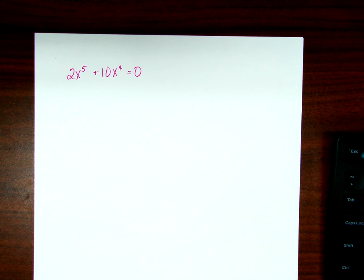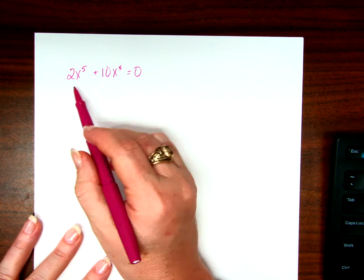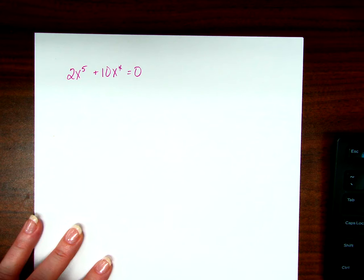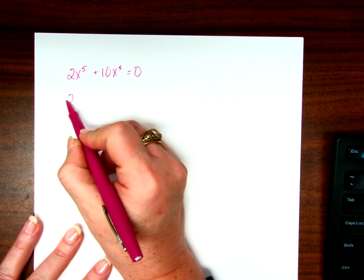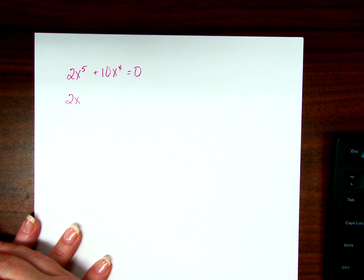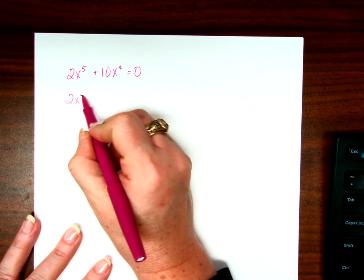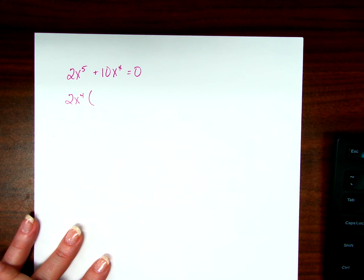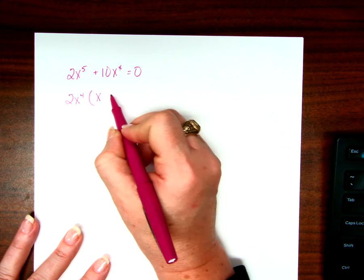So what do you want to do first? It's definitely an equation I have to solve, right? Greatest common factor. What is the greatest common factor in these two terms? For sure 2, right? What's the biggest x I can take out? x to the fourth, right? What's left if I take out a 2x to the fourth? Yep, perfect.